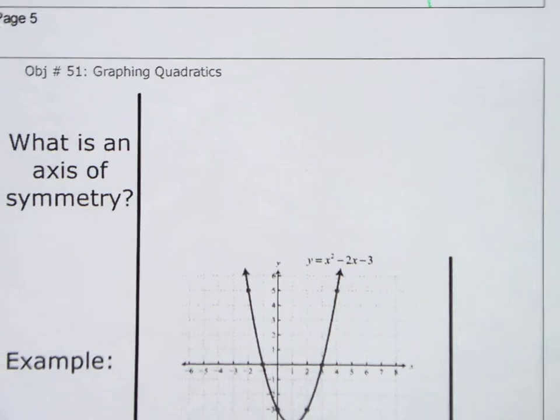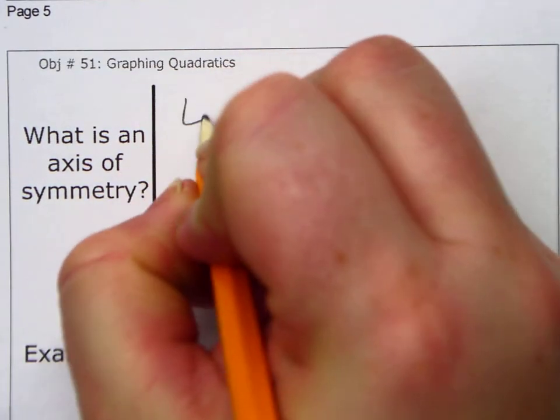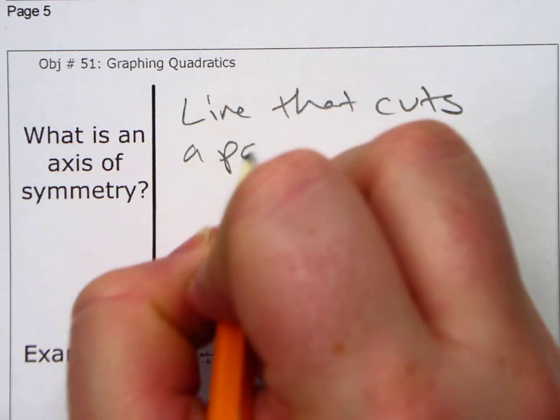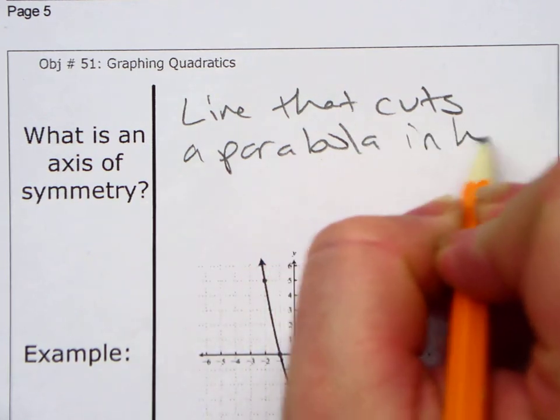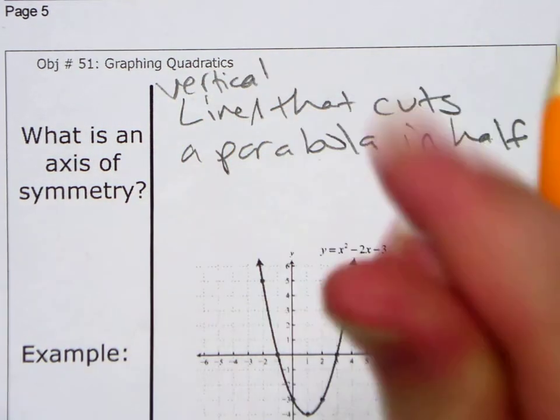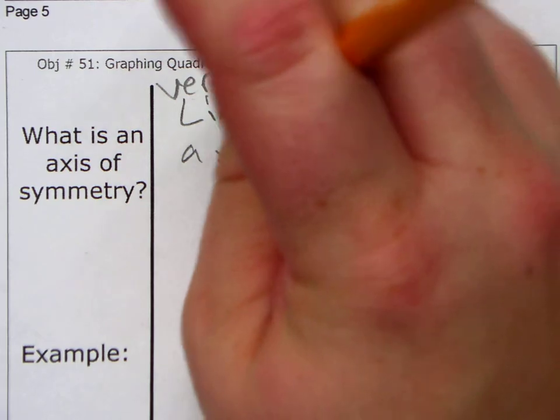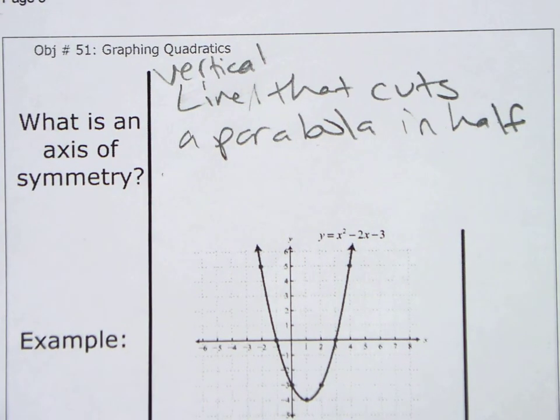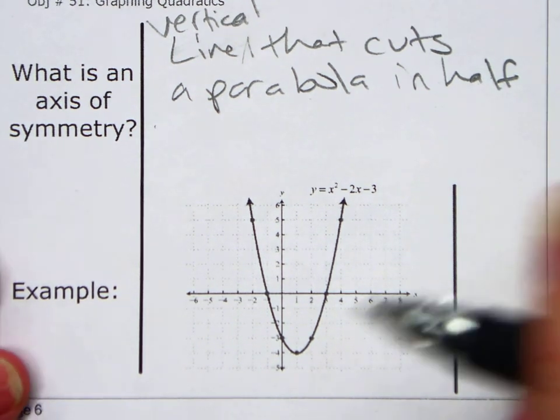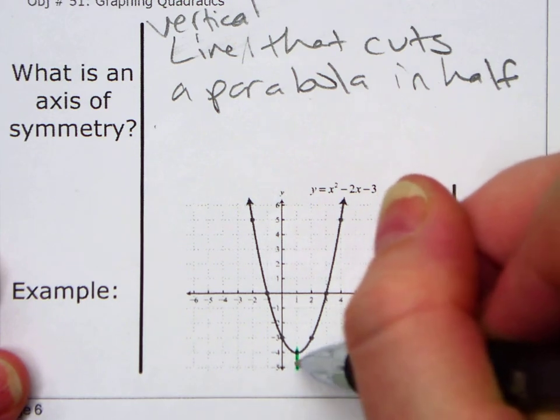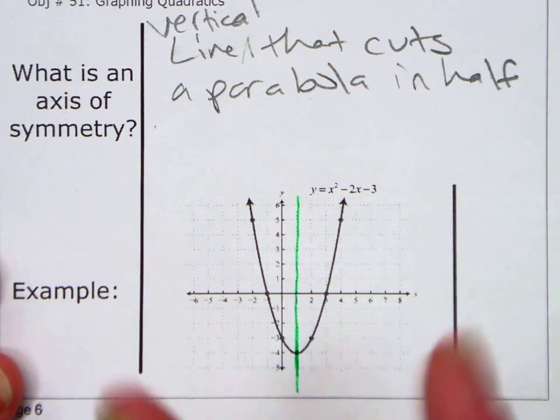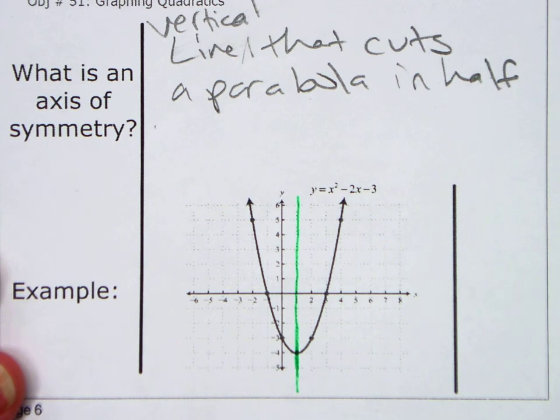All right, what is an axis of symmetry? It's the line that cuts a parabola in half, and actually, instead of line, put vertical line. It's a vertical line that cuts a parabola in half, okay? All right, so for example, where do you think the axis of symmetry is for this parabola? It's right down the center. See, basically find the vertex, and it's this line right here. It's this green line, so that's your axis of symmetry. If you fold over the line, it's going to be on top of itself.